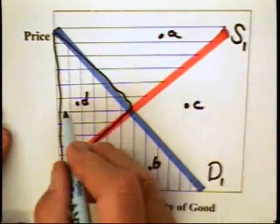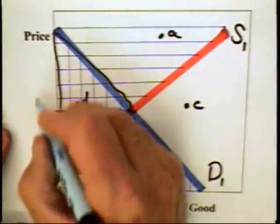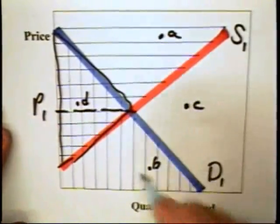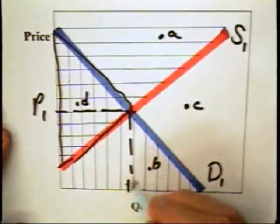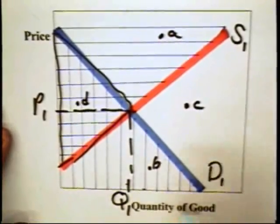Notice that the competitive market will move toward a price of P1 and a quantity of Q1. That is, it will move to the equilibrium or intersection of supply and demand curve.